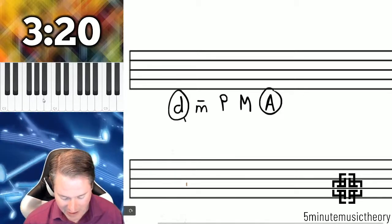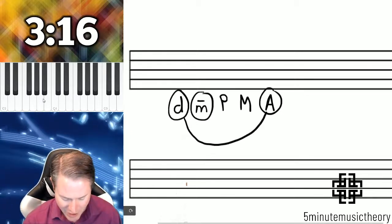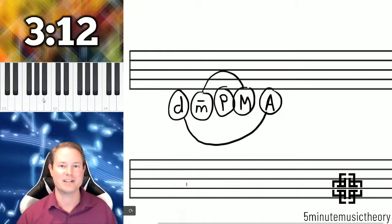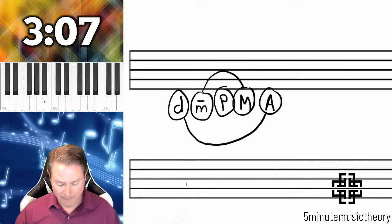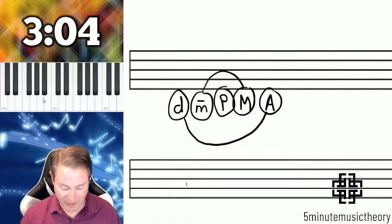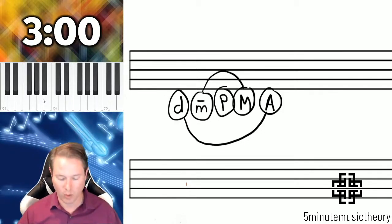Diminished and augmented intervals are opposite of each other. Major and minor intervals are opposite of each other, and perfect interval is its own opposite. I guess maybe that's why it's called perfect. Not really, but this is important when determining complementary intervals because the two intervals that are complements of each other will have opposite qualities.